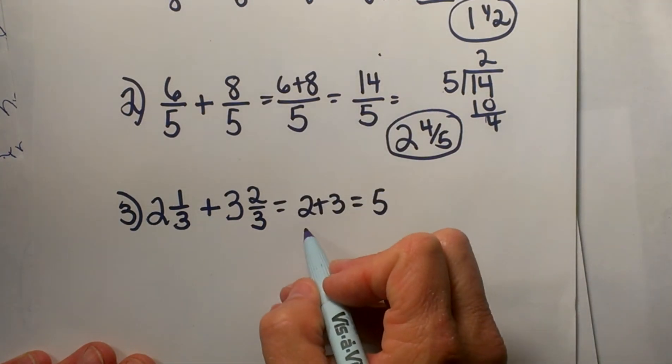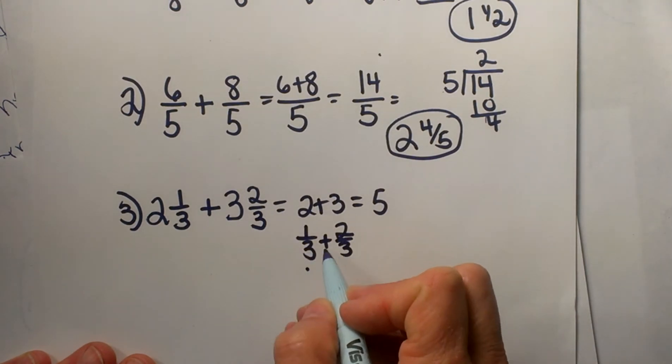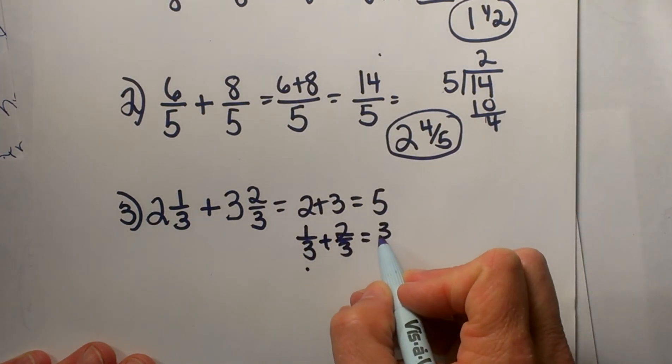And then I'm going to take my fractions and add those together. I have 1/3 plus 2/3, that gives me 3/3.